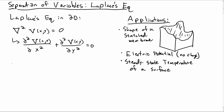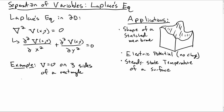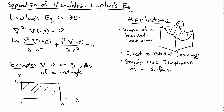We're going to investigate solutions to this equation using separation of variables. Let's consider an example where v is equal to zero on three sides of a flat rectangle. This might be the case of the electric potential being set to zero because of conductors on three sides of a plate. Here is our two-dimensional plate with lengths a and b. So v equals zero on the two horizontal sides and zero on the bottom.